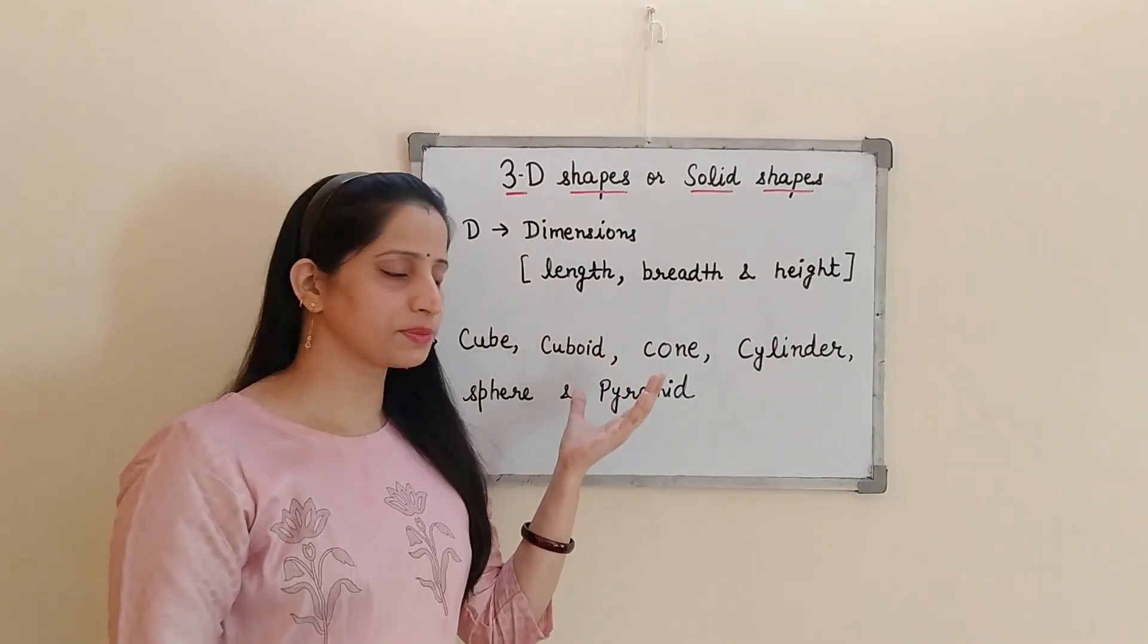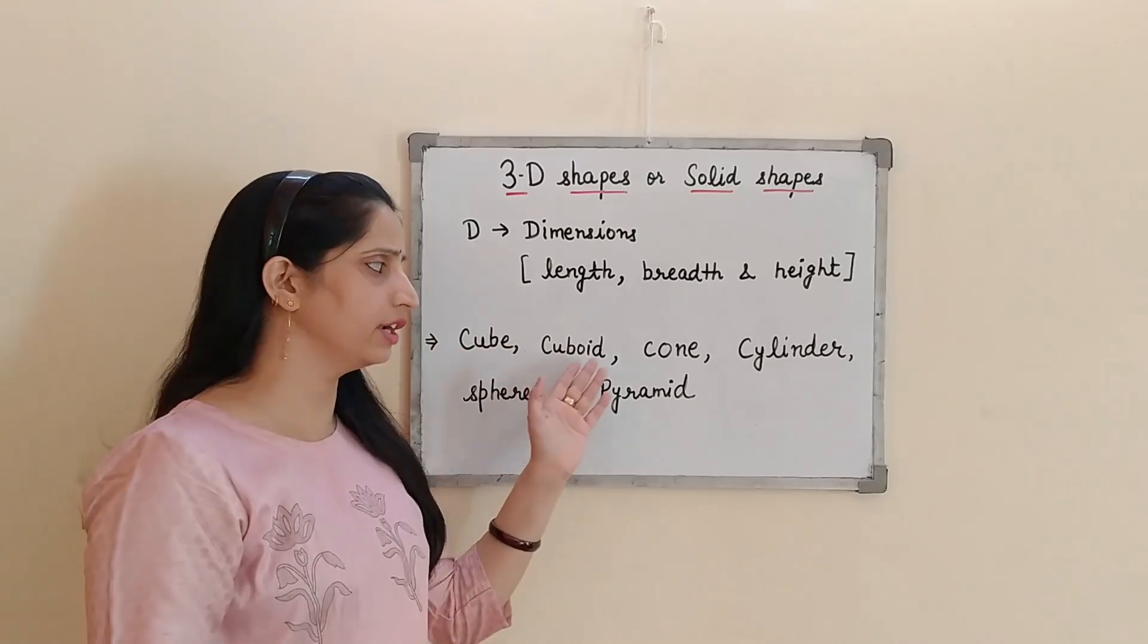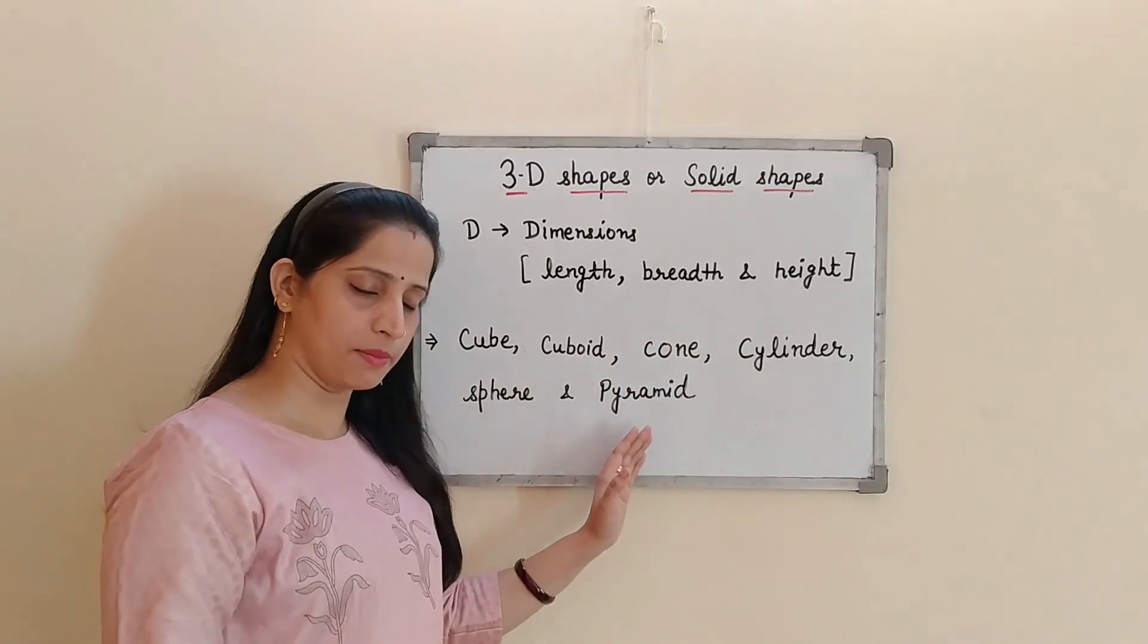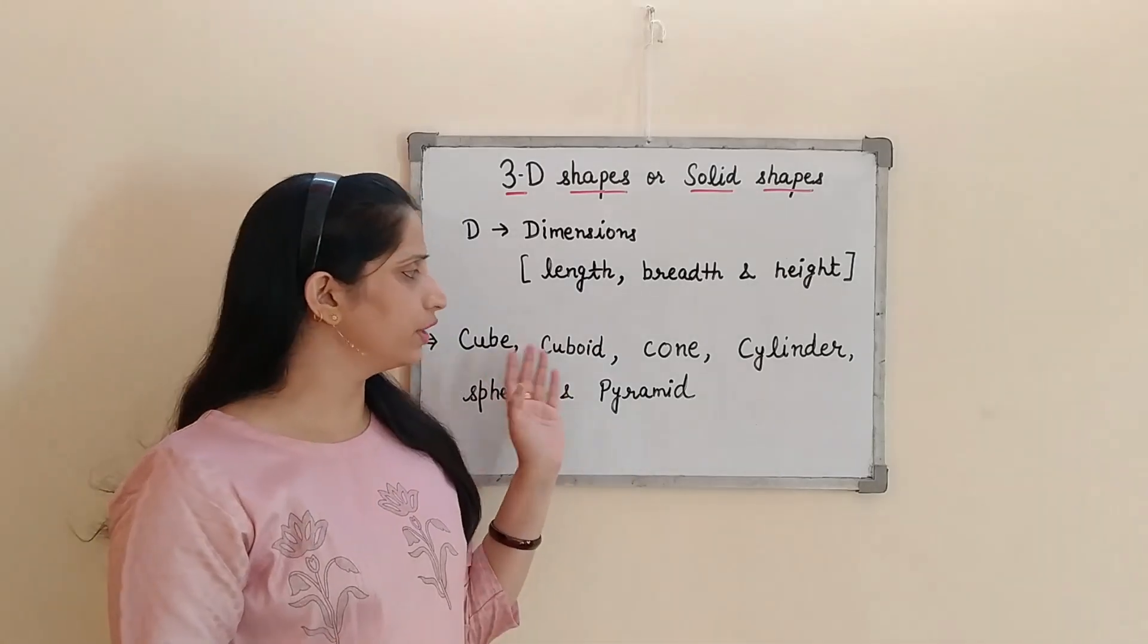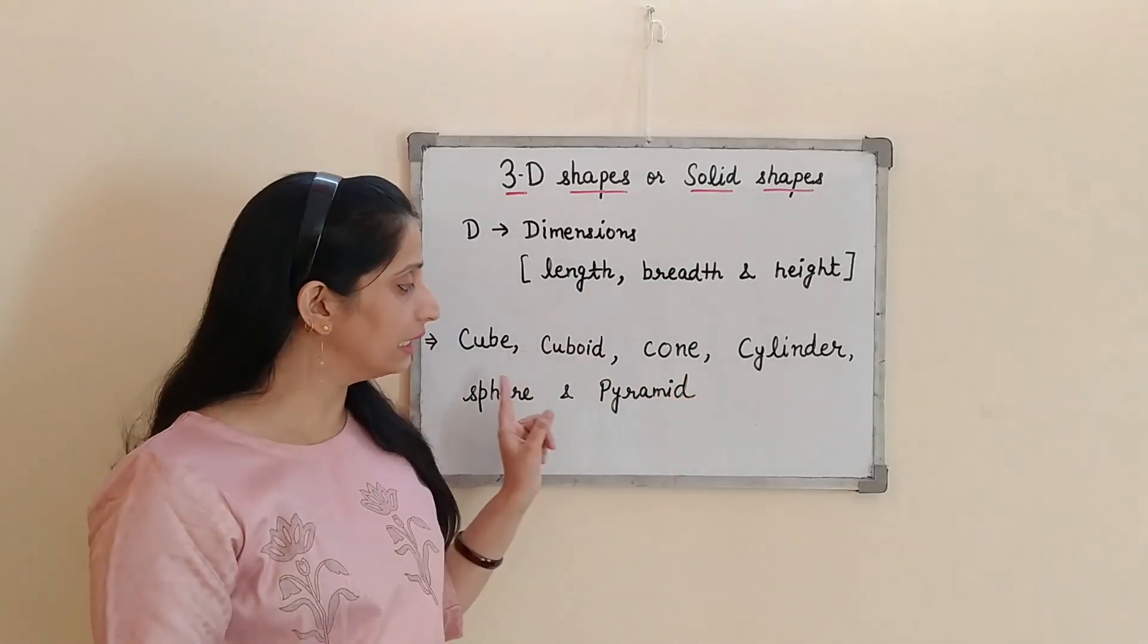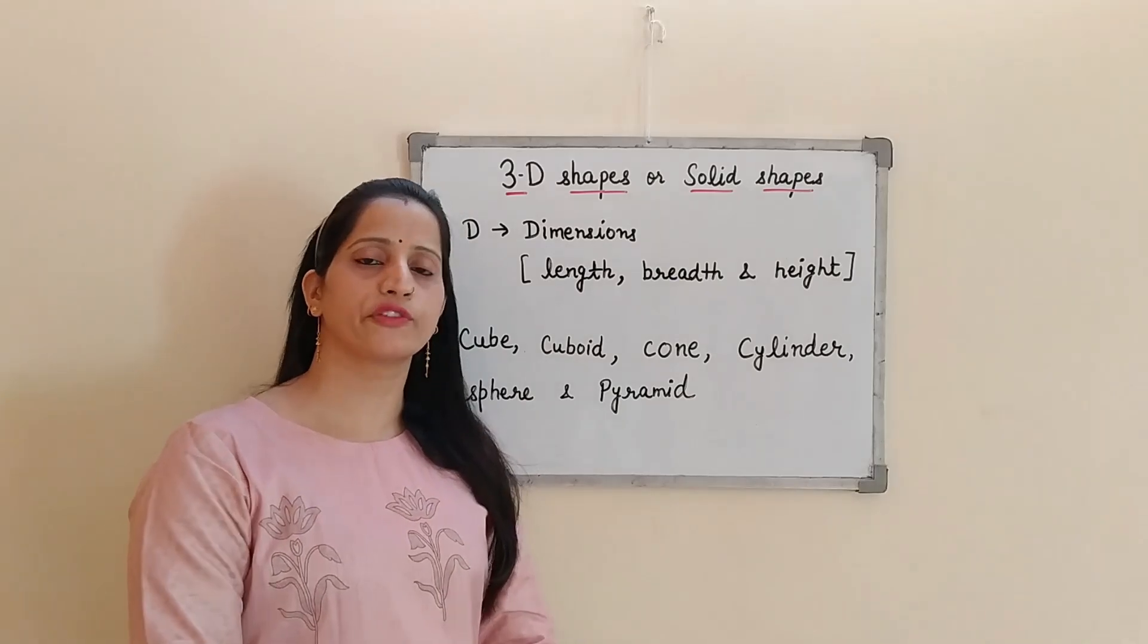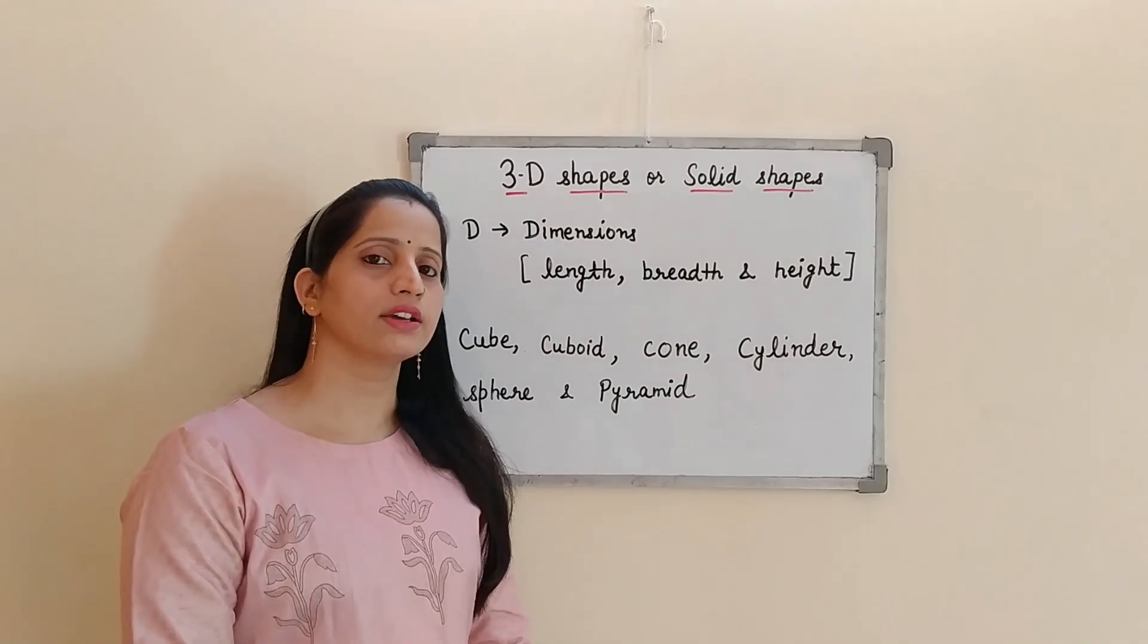The examples of 3D shapes are cube, cuboid, cone, cylinder, sphere, and pyramid. Today in this video we will discuss about these 3D shapes. Along with this we will discuss about their faces, edges, and vertices.